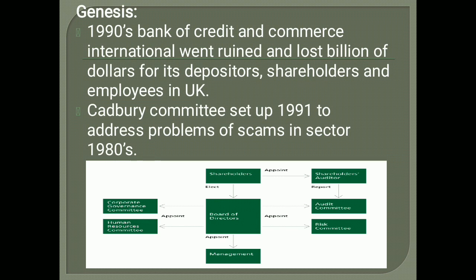There was a bank in the UK which ran into bankruptcy. A Cadbury Committee was appointed in that period in 1991 to examine what were the reasons for the bankruptcy. The major reason identified was corporate governance.